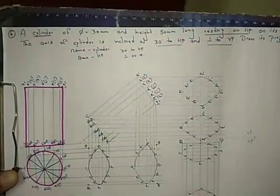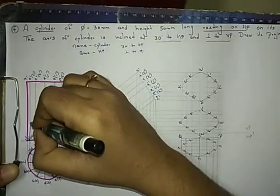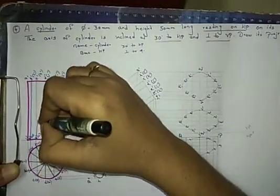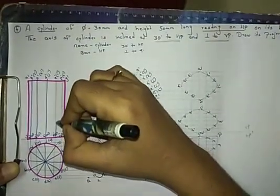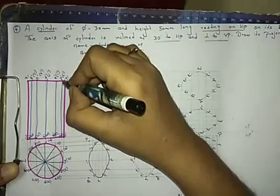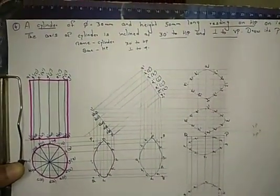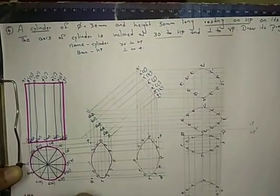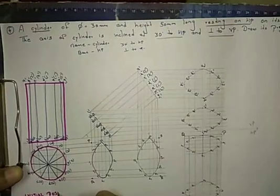From the reference line, height is 50mm. Then project all the points. From b and l draw a straight line, from c and k draw a straight line, from d and j again, from e and i, then from f and h. This completes our initial position — this is Step 1.